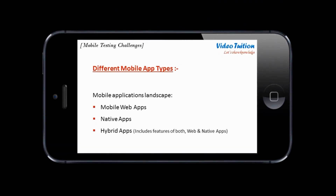A mobile application can be a web app, a native app, or a hybrid app which has both contents. Testing of each such application type is different from another as their implementation is quite different from one another.